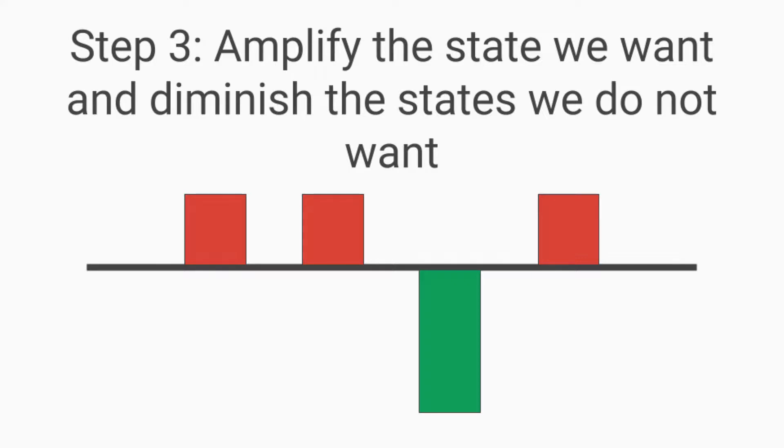Step three, we amplify the state that we want and diminish the state that we do not want. In the previous step, we already found out, using the quantum oracle, which state we want to amplify and which states we do not want to amplify and want to diminish instead. So, in this step, we can diminish the probability of collapsing into all of the states that are still positive and amplify the probability of collapsing into the state that is still negative. And the negative doesn't matter in this case, as we're able to re-invert this value around zero and make it positive again.